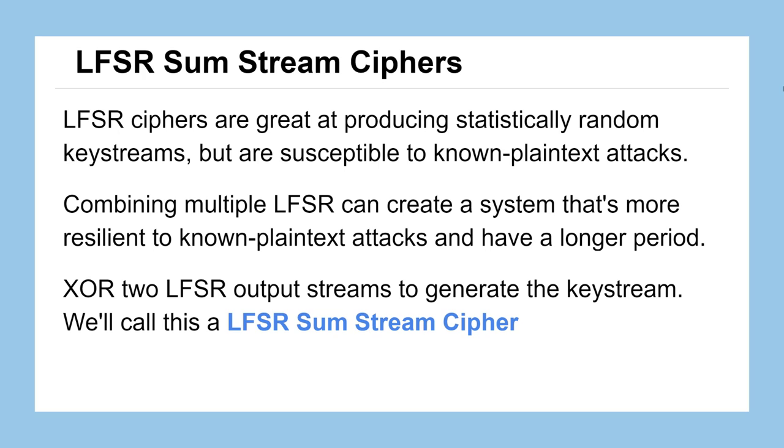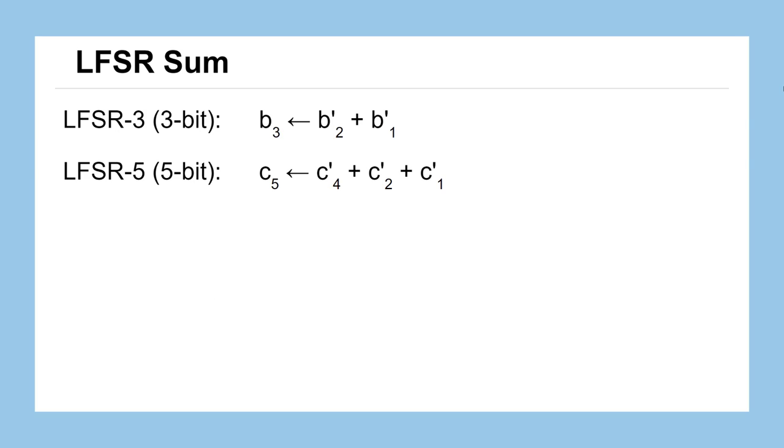We'll do this by XORing the two LFSR output streams together to generate a new keystream, and we'll call this method the LFSR sum stream cipher. We'll define two LFSR systems - a 3-bit LFSR and a 5-bit LFSR with the following definitions.